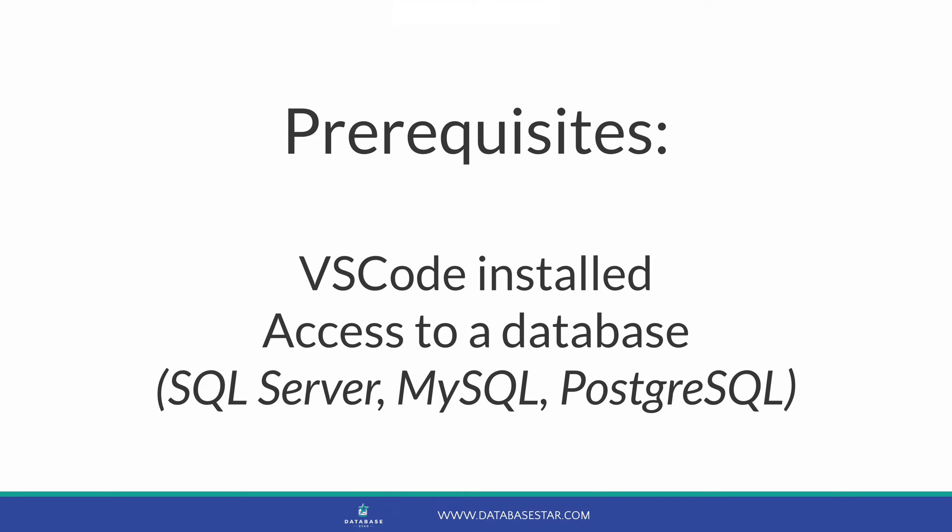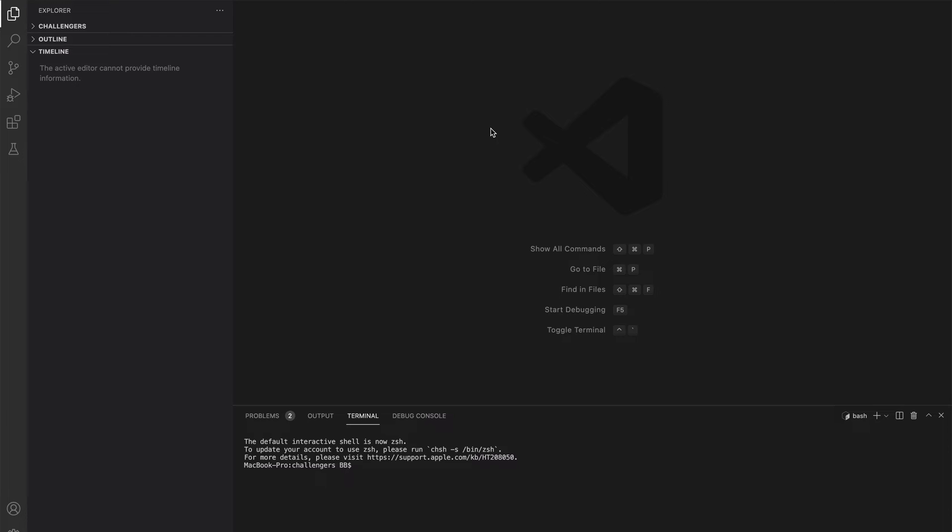To connect to a database from VS Code, you'll need to have VS Code downloaded and installed. You'll also need access to a database such as SQL Server. We'll be creating connections for SQL Server, MySQL, and PostgreSQL. Oracle Database is not supported with this particular plugin, but there will be a separate video for that. I assume you're using another tool like SQL Server Management Studio or MySQL Workbench and want to use VS Code instead.